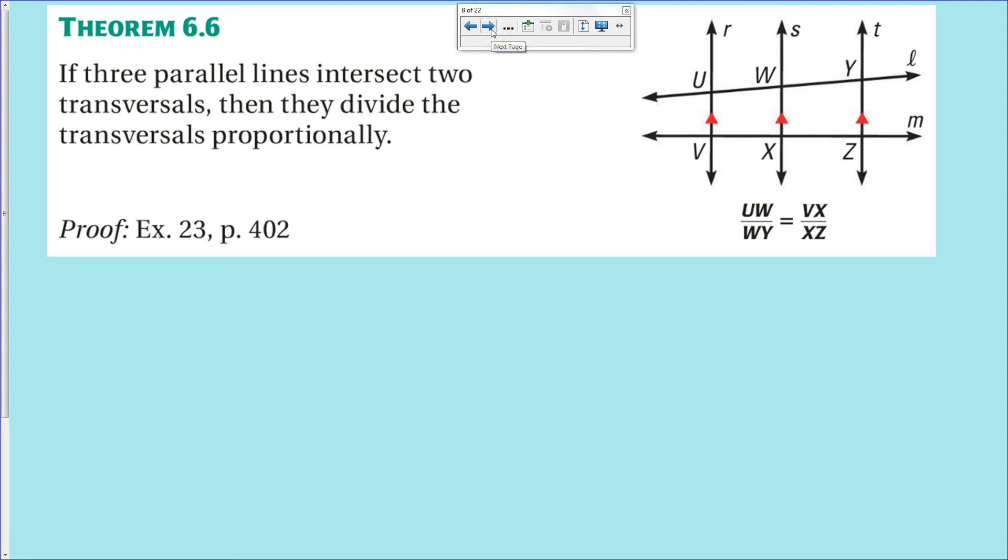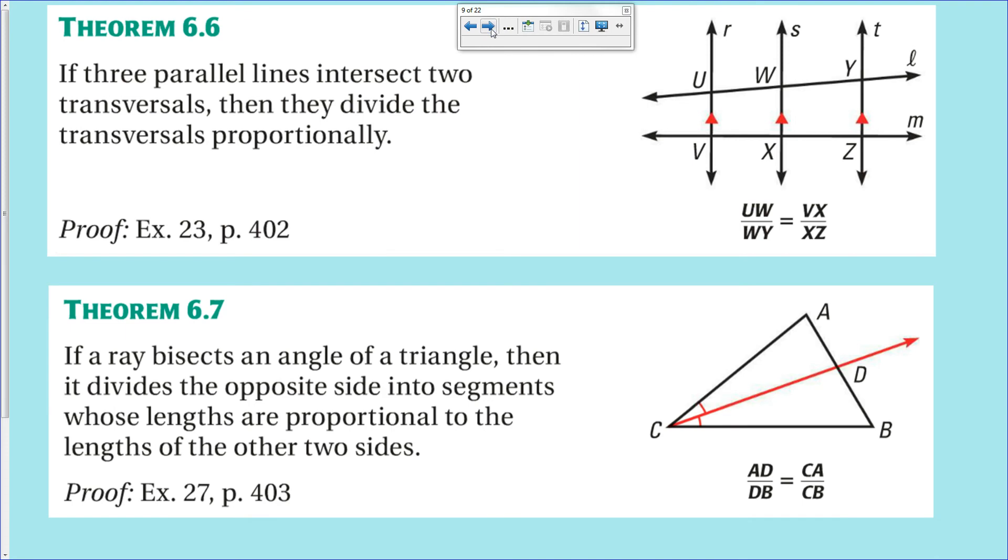Now the last theorem we have today, theorem 6.7, is a very obscure one that I've never ever used before. But you need to know it for the test, so here it is. Definitely worth knowing this one, the ins and outs of this drawing. So what this drawing assumes is that you have a triangle. You take a triangle and you take one of the angles in the triangle and you bisect it. So you bisect one of these angles and it intersects the opposing side.